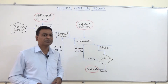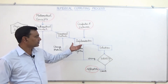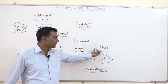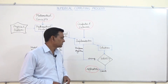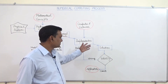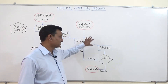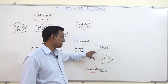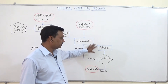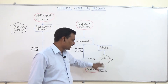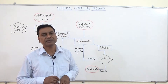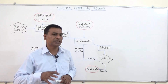After development of the program — after making the program for this particular numerical method — we get a solution. This solution is the executed, runnable program. Now we check its validity: whether the solution is valid or not.